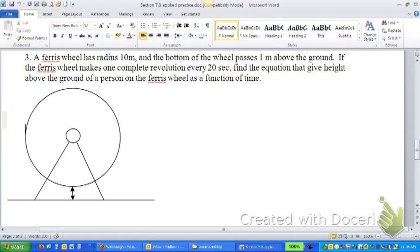A ferris wheel has a radius of 10 meters, the bottom of the wheel passes 1 meter above the ground. If the ferris wheel makes 1 complete revolution every 20 seconds, find the equation that gives height above the ground of a person on the ferris wheel as a function of time.